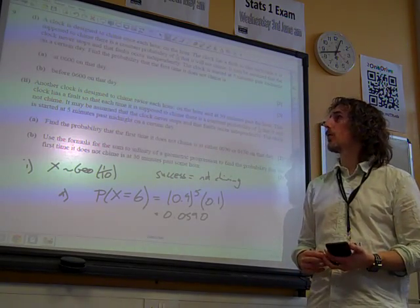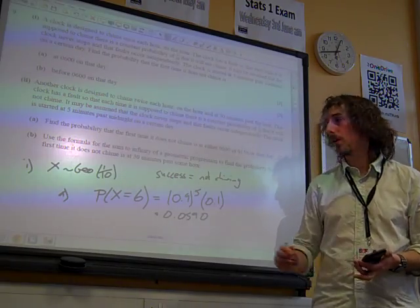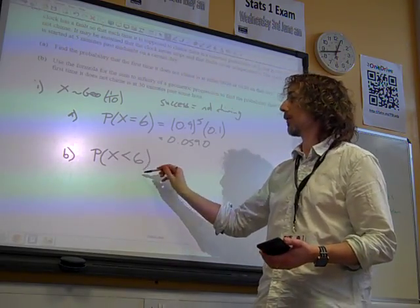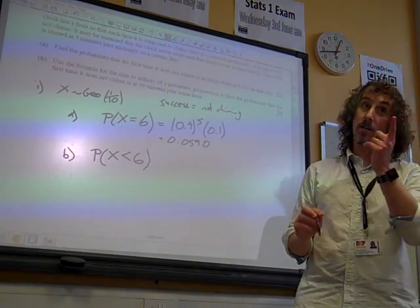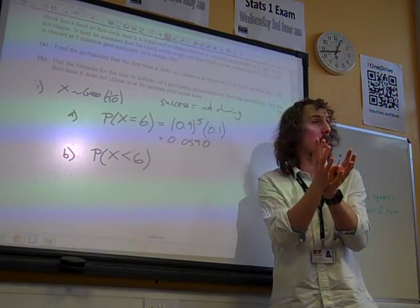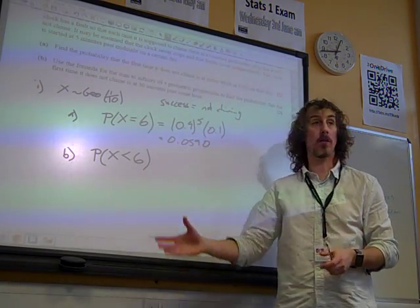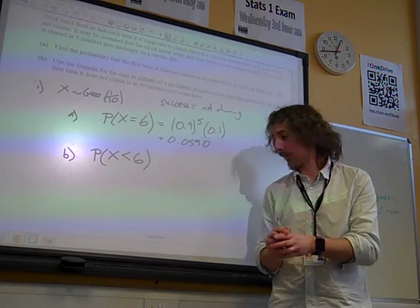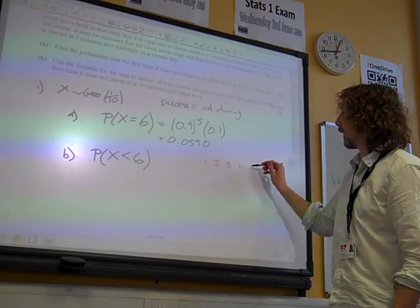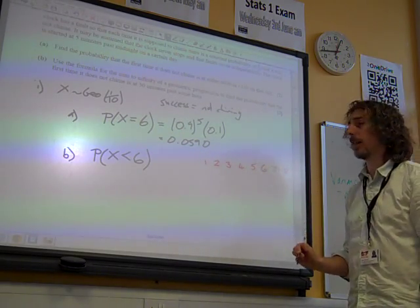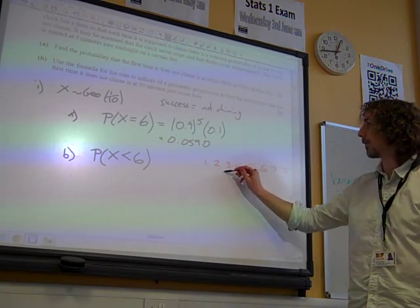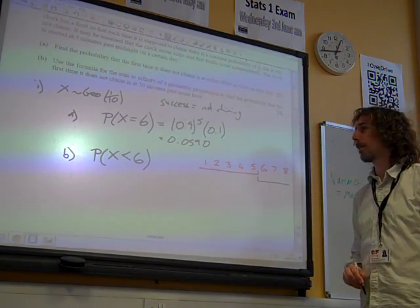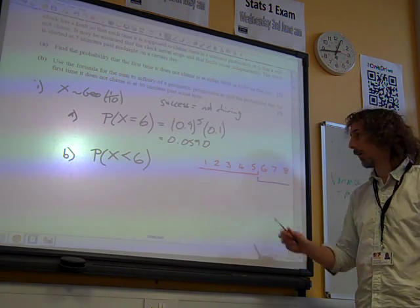What's the probability that the first time it does not chime is before 6 o'clock on that day? So, that's really the question saying to us, for part B, probability that x is less than 6. Before 6. Whereas with binomial, when we're using the tables, we want less than or equal to as our thing, remember, actually, the easiest thing to work with with geometric distribution is greater than. Because x being greater than a number means it's that number of failures first.